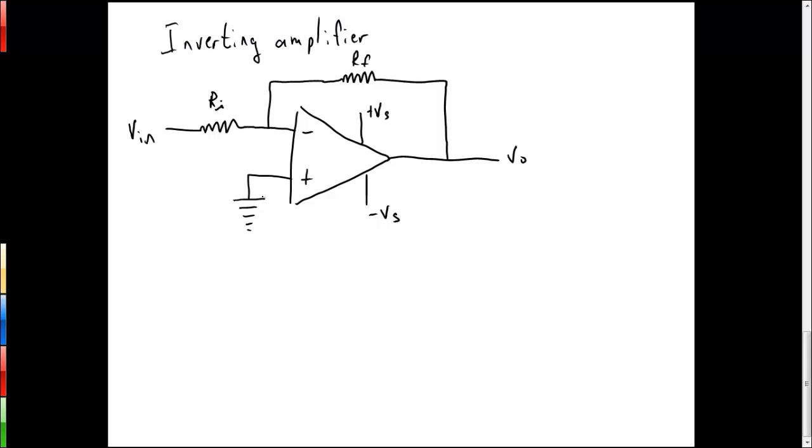And we can use golden rule number two to say that the op amp will adjust the value of V out, or VO in this case, such that the voltage at the inverting input terminal will be the same as the other one, which in this case is ground.